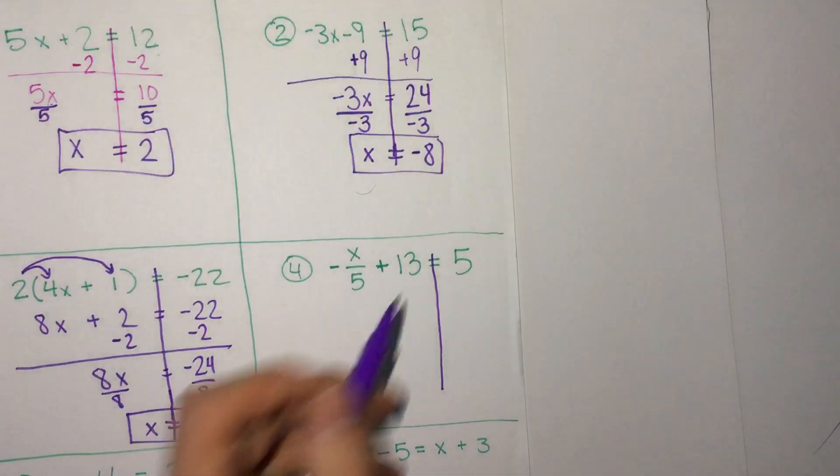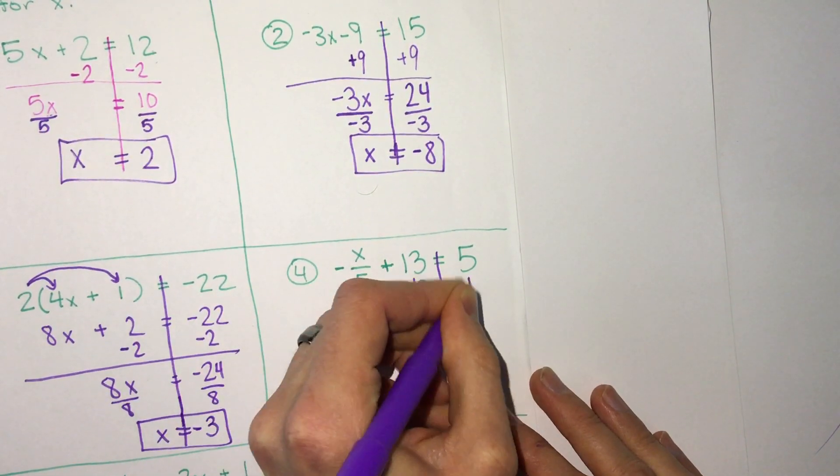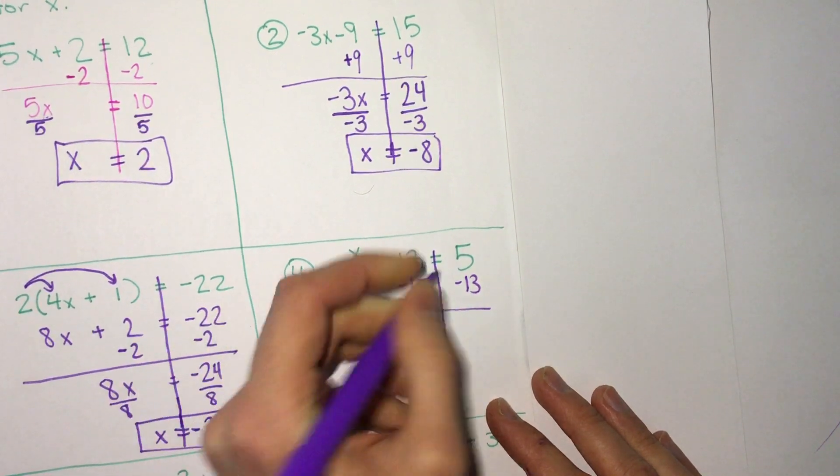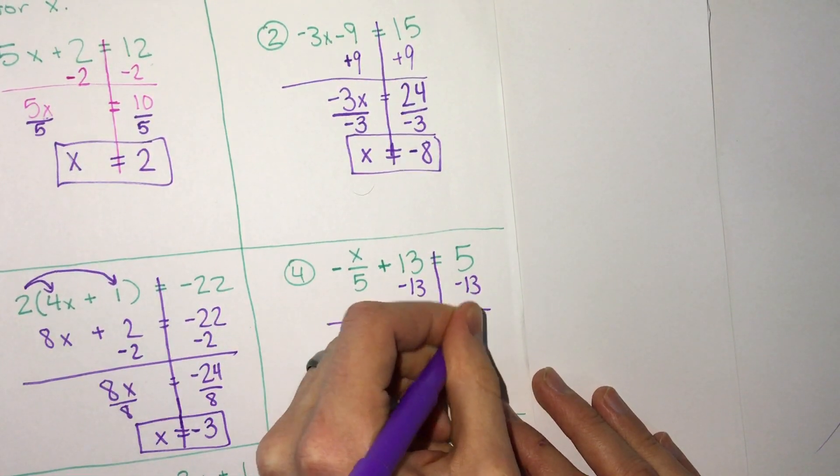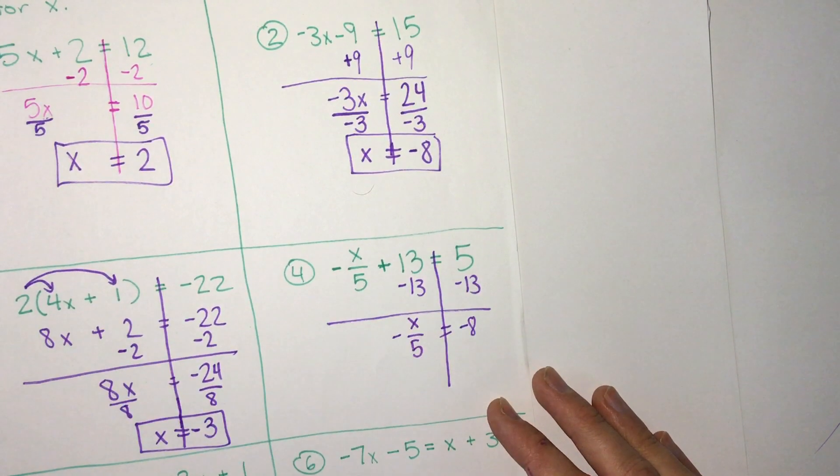So we want to move 13 away from the side with x. It's plus 13, so we'll do minus 13. And do that to both sides, we get negative 8 on the right side, negative x over 5 on the left side.